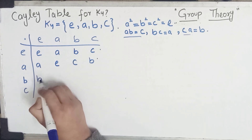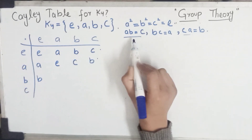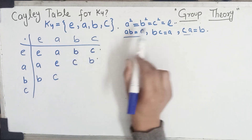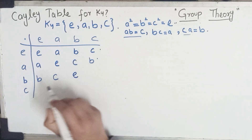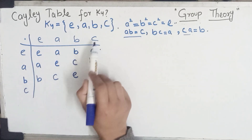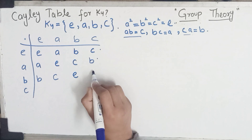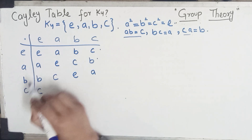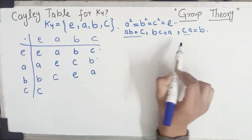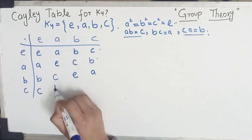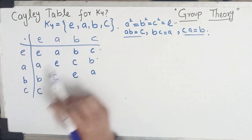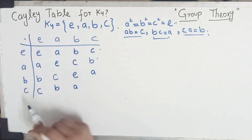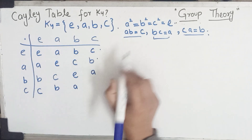Uske baad b row: b·a = c. Phir b² = e, yaani one. Uske baad b·c = a. Uske baad c ko e se karaenge toh c aa jaega. Then c·a = b. Yahan par b aa gaya. Then c·b = a. And then c² = identity (e).